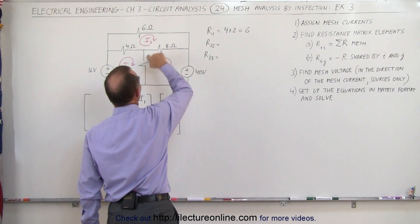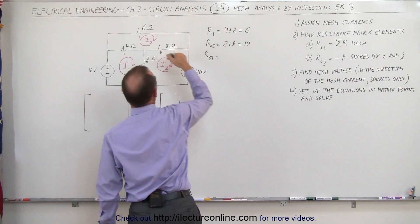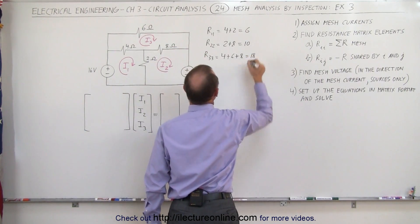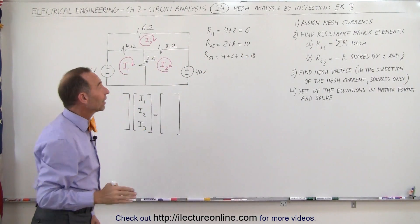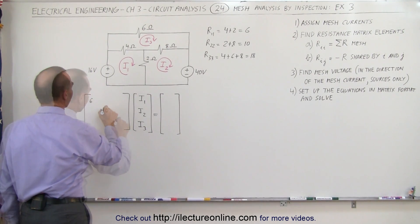Going around the second one, we see 2 plus 8, which is equal to 10. And the third one, it's 4 plus 6 plus 8. 6 plus 8, that's equal to 18. So those are the three diagonal values of our resistance matrix. 6, 10, and 18.